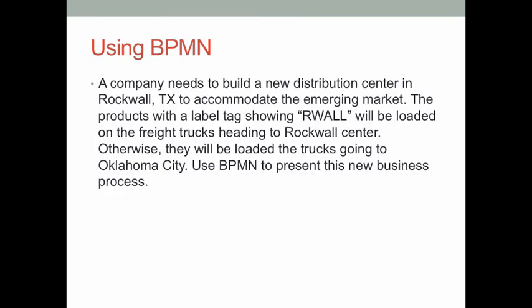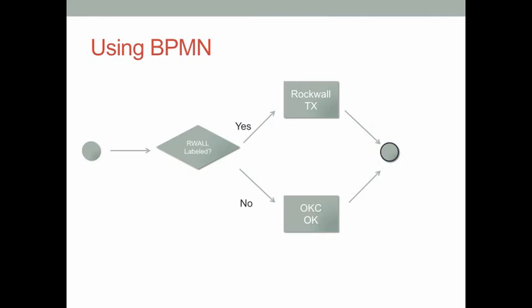Now let's look at another example. This is the model design for a logistics process. We have a decision-making point: we want to check if a product is labeled as RWALL. If it is, we send it to the distribution center in Rockwood, Texas. Otherwise, we send the product to the distribution center in Oklahoma City.